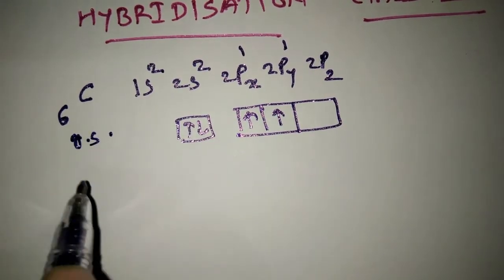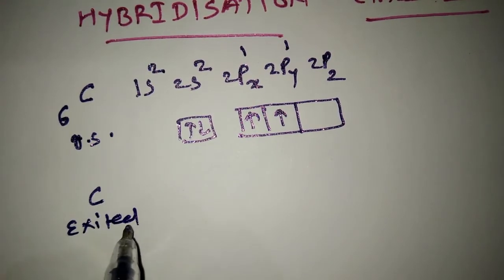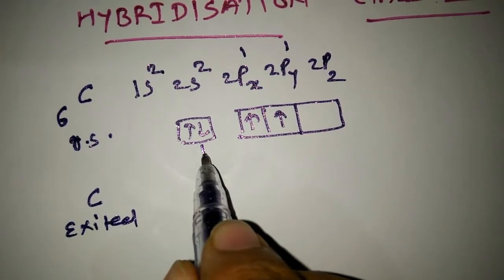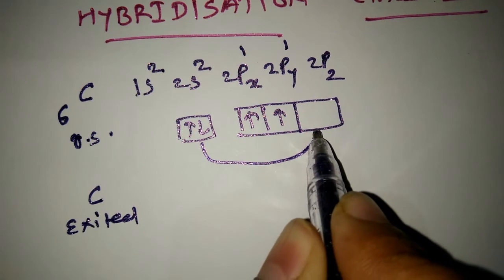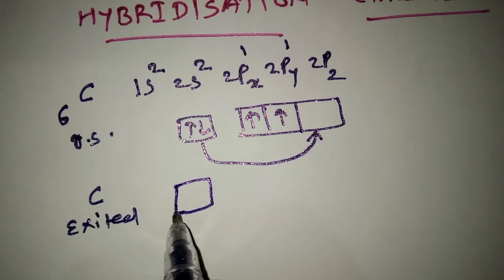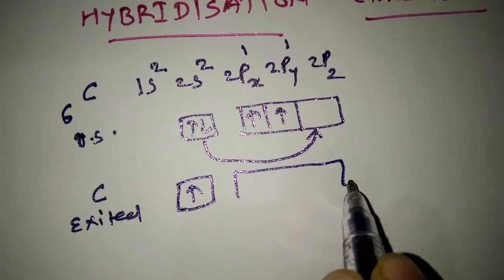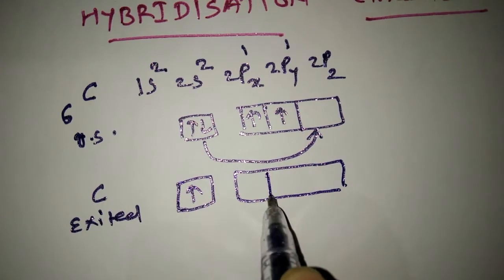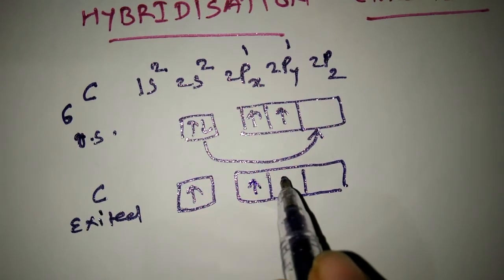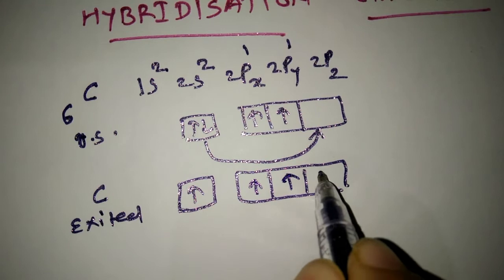Now carbon is in excited state. One electron of 2s shifts to 2pz. Configuration is 2s1, 2px1, 2py1, 2pz1.